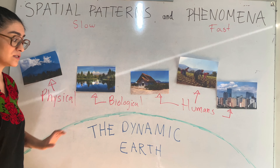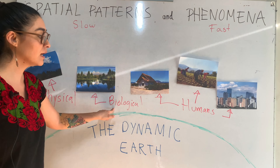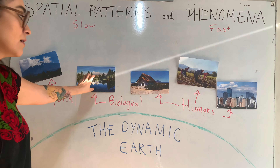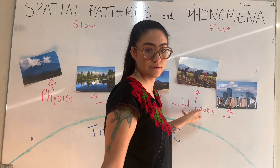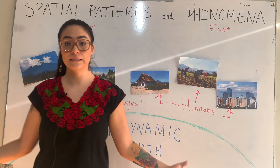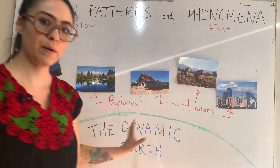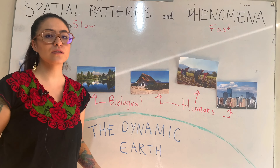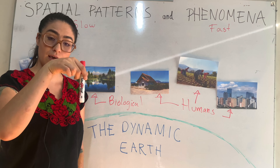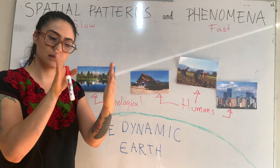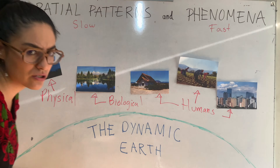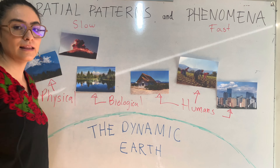Physical patterns are when only the Earth is involved; biological when organisms like pollinators are involved; and human patterns for cities and civilizations. But not all processes are slow. We also have changes that start, have a beginning and an end, and are kind of fast. Like this volcanic eruption — one that is really pretty but dangerous.